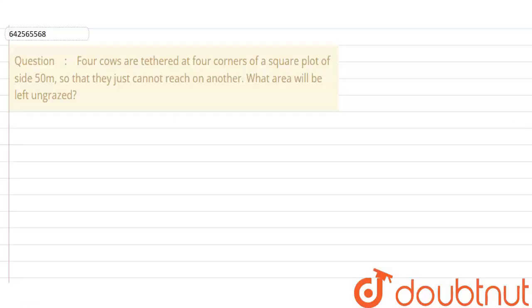Hello everyone, let's start with today's question. So today's question says that 4 cows are tethered at 4 corners of a square plot of side 50 meter so that they just cannot reach one another. What area will be left ungrazed?